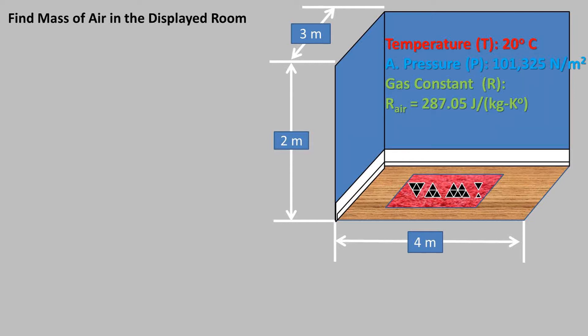In this problem we want to find the mass of air in the displayed room which has a base of 4 meters, a width of 3 meters, and a height of 2 meters. This room is at standard temperature and pressure, which is 101,325 pascals and a temperature of 20 degrees Celsius.